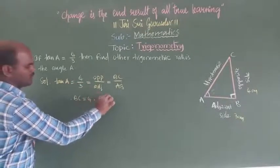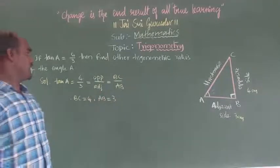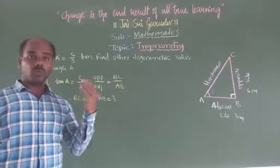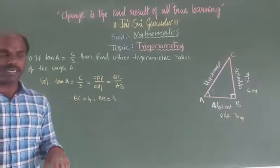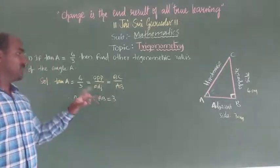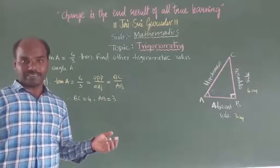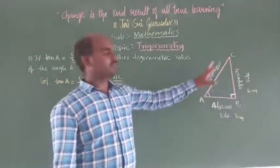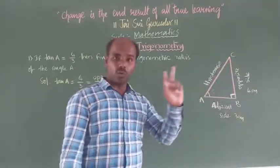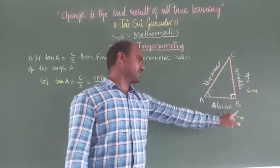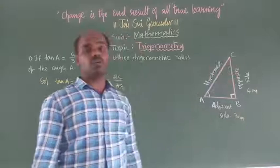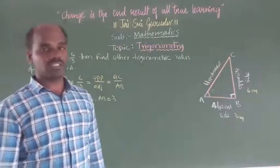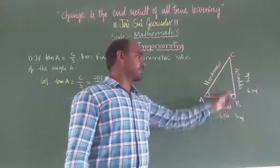BC is equal to 4 and AB is equal to 3. We have to find the other trigonometry ratios, meaning the remaining five ratios. To find those five ratios, we compulsorily need to know three side measurements. Here we know only two side measurements: four centimeters and three centimeters - AB and BC. So we have to find AC also according to the Pythagorean theorem. AC square is equal to AB square plus BC square.